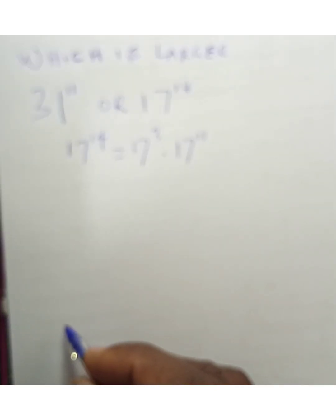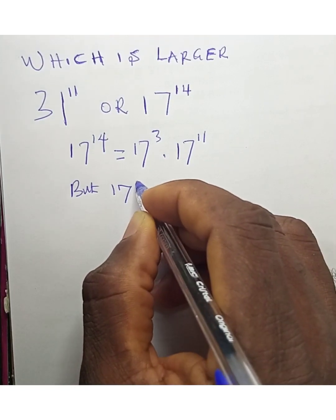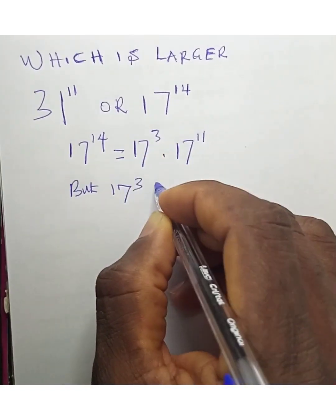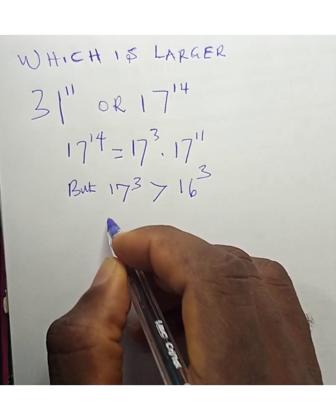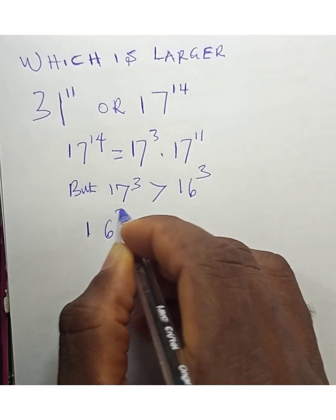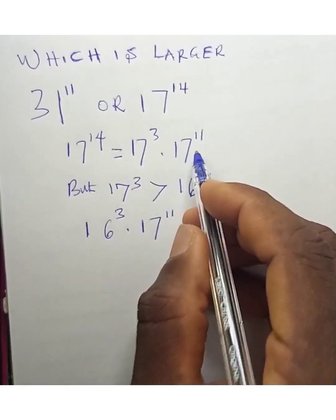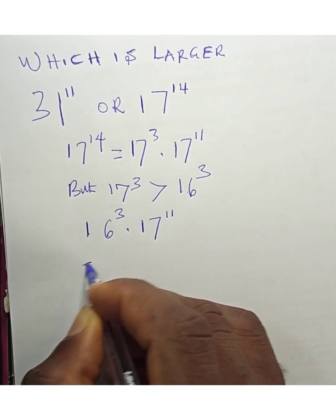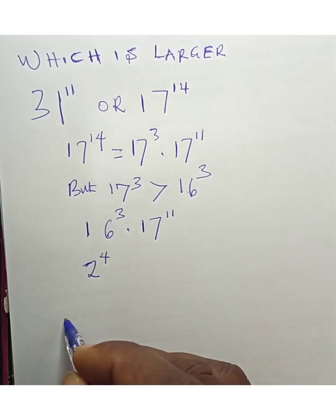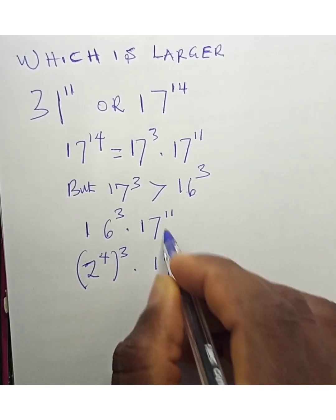We can also notice that 17 to the power of 3 is greater than 16 to the power of 3. So we can write this expression with 16 to the power of 3 times 17 to the power of 11. Now, 16 is 2 to the power of 4, so 16 to the power of 3 equals 2 to the power of 4, raised to the power of 3, times 17 to the power of 11.